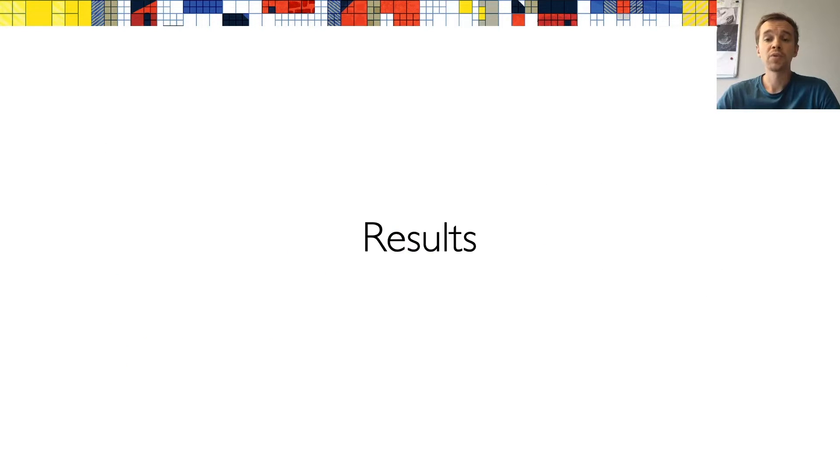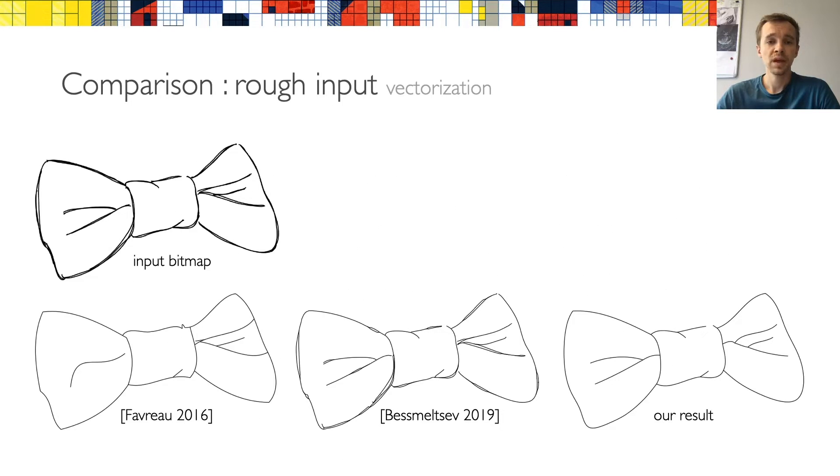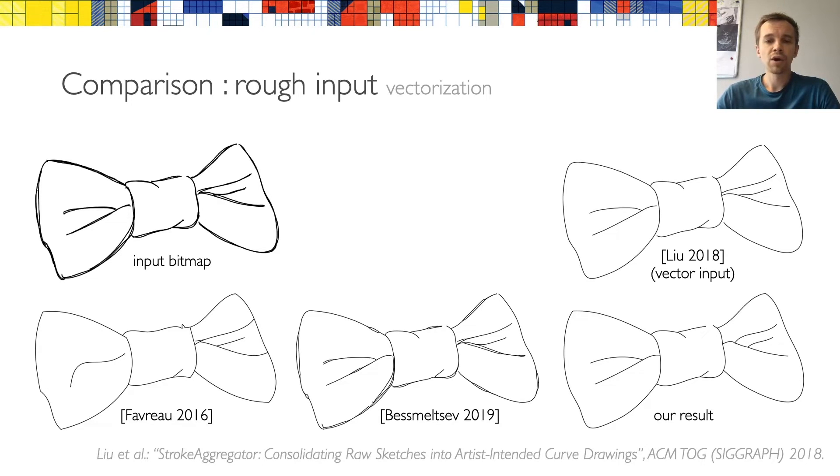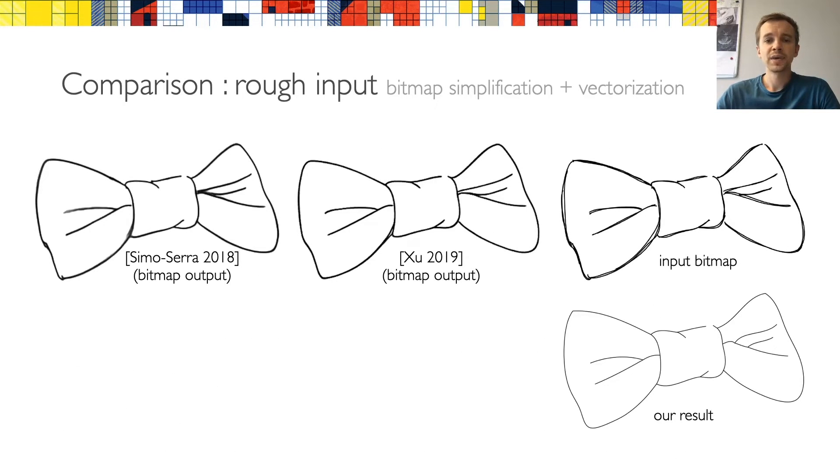Let's now have a look at some of our results. On clean input, our method performs similarly to previous work. However, on rough input, we tend to perform better than existing vectorization methods. In fact, our results are often on par with the stroke aggregator simplification of Liu and colleagues. However, their method has more information than ours, since they take vector curves as input, whereas we take a bitmap sketch.